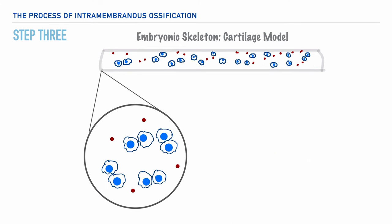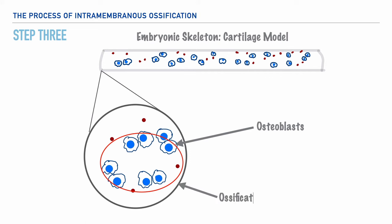These osteogenic cells differentiate and become osteoblasts, which appear as a cluster of cells. This cluster of cells is called an ossification center.